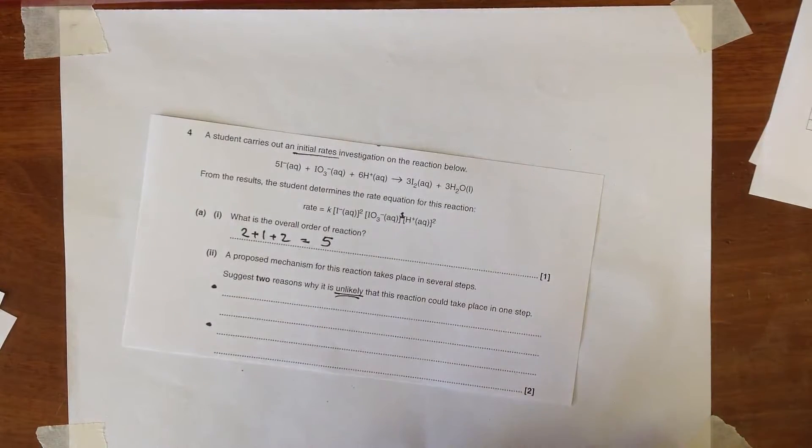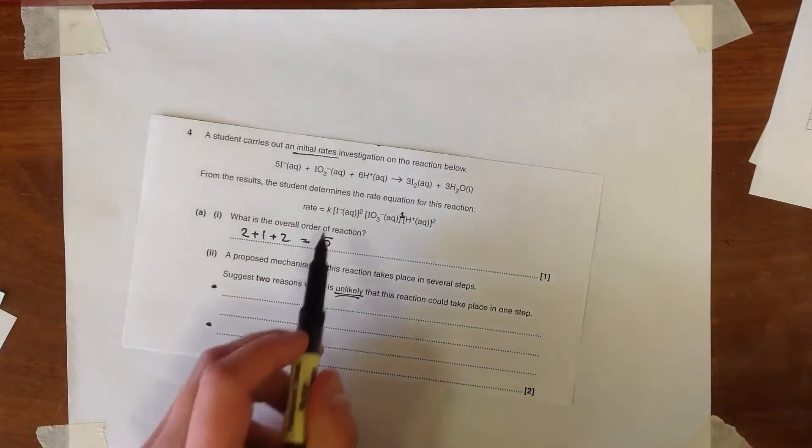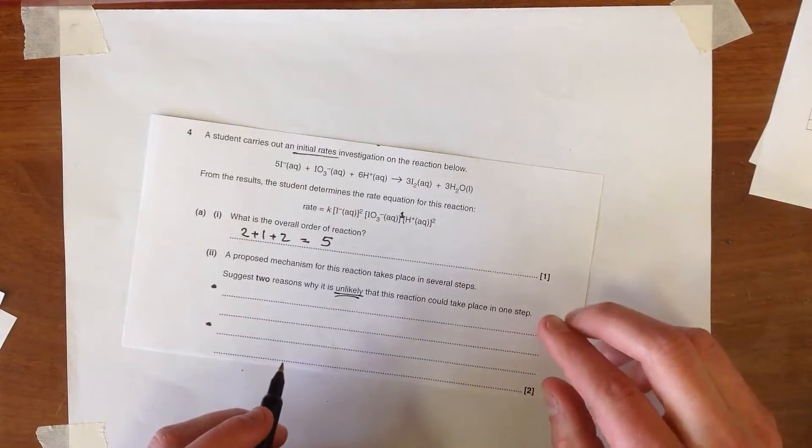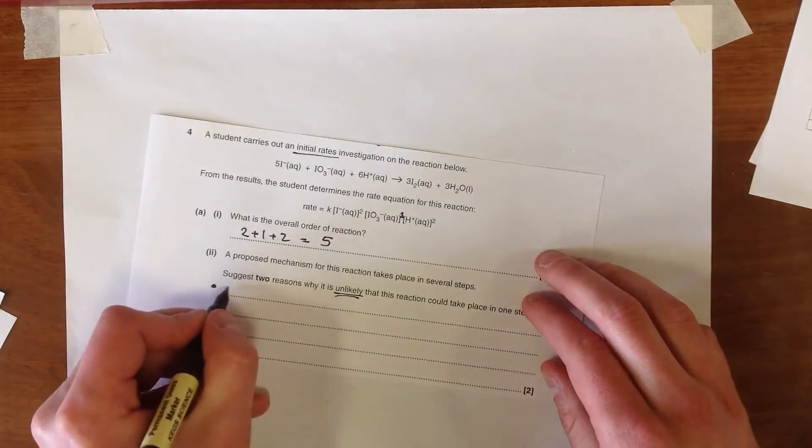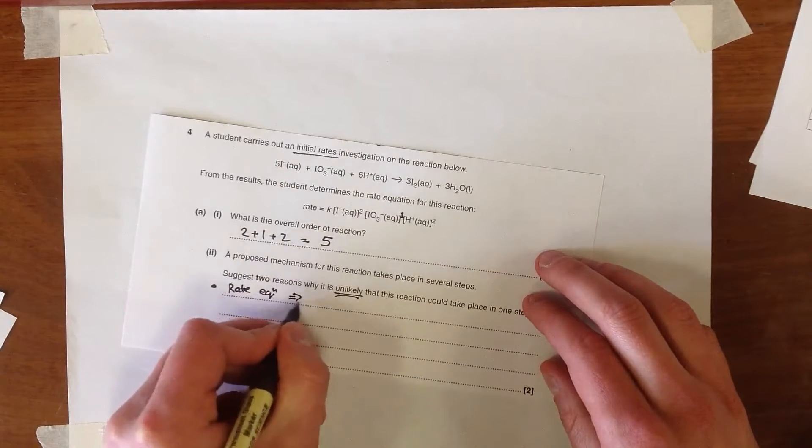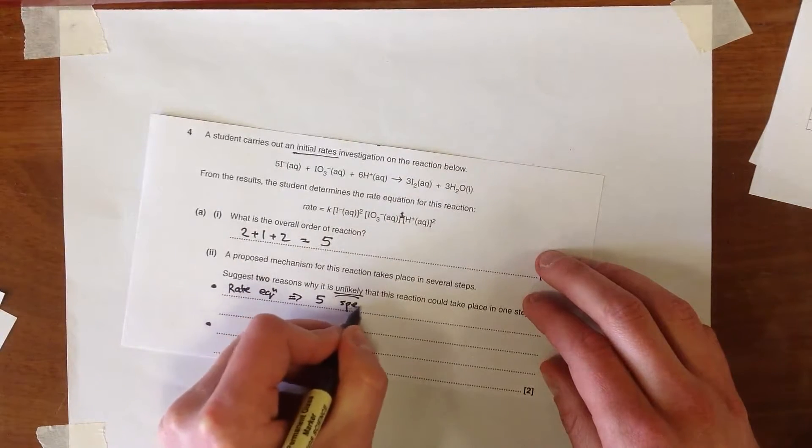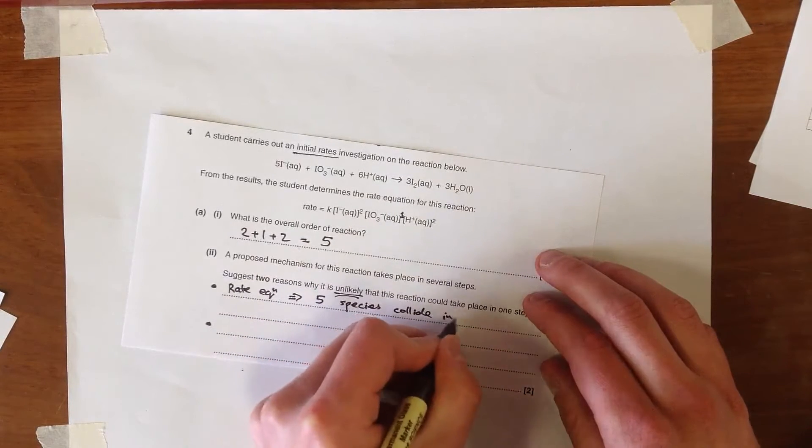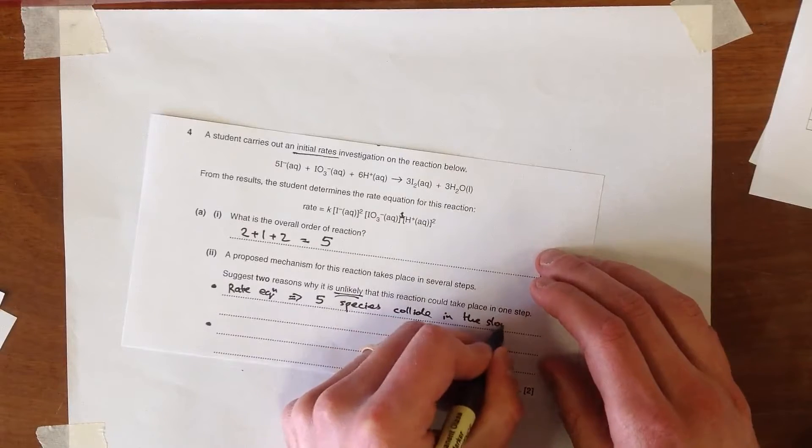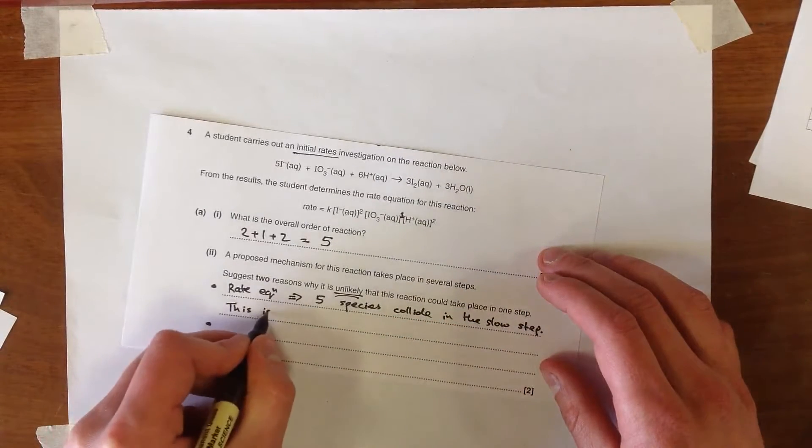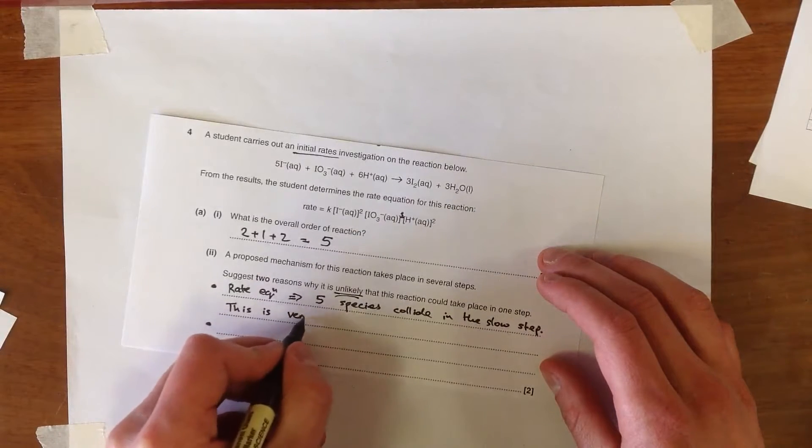So the first reason here is that the rate equation is showing us the stoichiometry of the slow step. So essentially the rate equation implies that five species collide in the slow step. This is very unlikely.